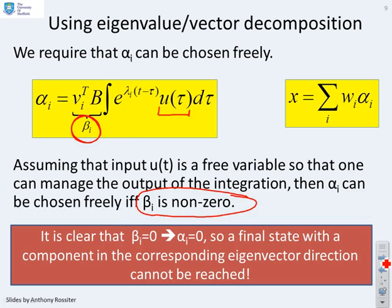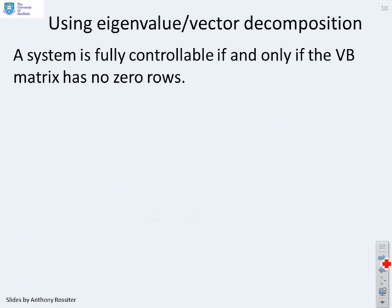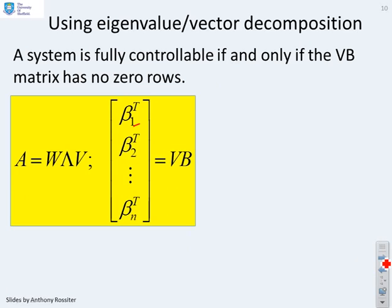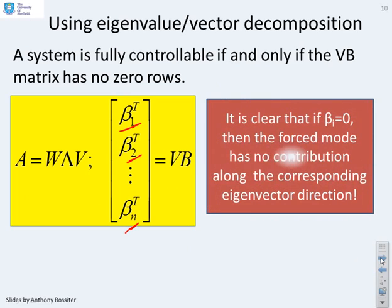So as long as βᵢ is not zero, we can choose αᵢ however we want. If βᵢ is zero, then we will have no contribution along the eigenvector direction wᵢ. And so if you specify an end state which has part of wᵢ in it, you will not be able to reach it, and so you will not be fully controllable. So a system is fully controllable if and only if the VB matrix has no zero rows. All those rows must be non-zero. If any βᵢ is zero, then the forced mode has no contribution along the corresponding eigenvector direction, and so you have no controllability along that direction.